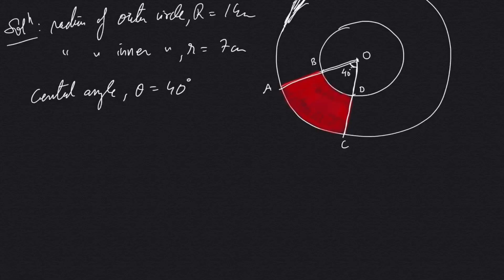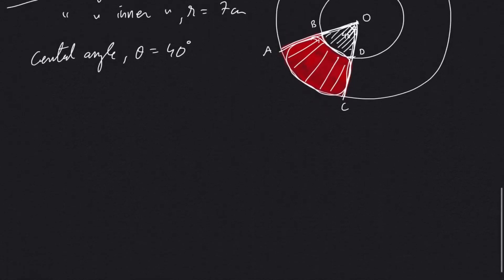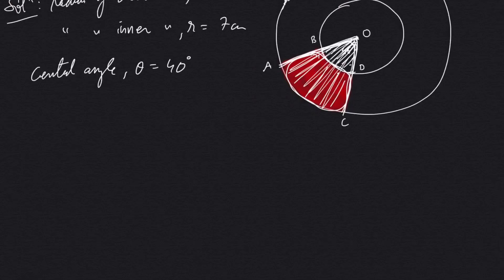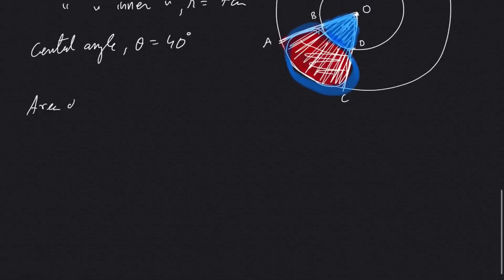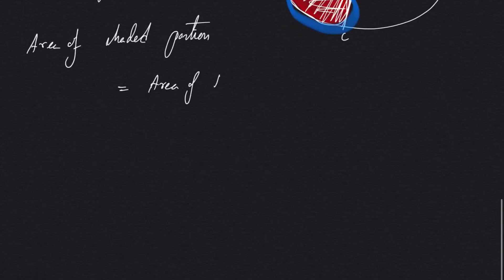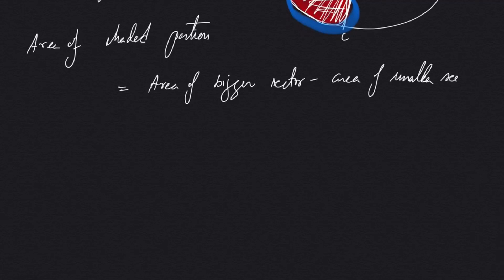The central angle θ is 40 degrees. To find the area of the shaded portion, we take the area of the bigger sector formed outside minus the area of the smaller sector. What is left after this subtraction is the shaded region — the ring-shaped area between the two sectors. So the area of the shaded portion equals the area of the bigger sector minus the area of the smaller sector.